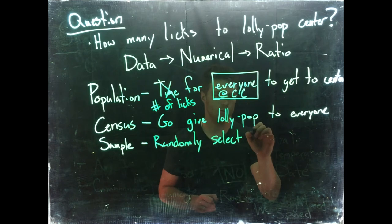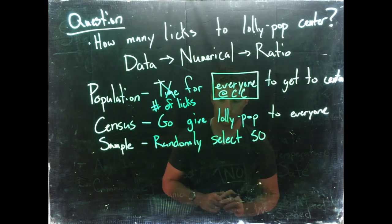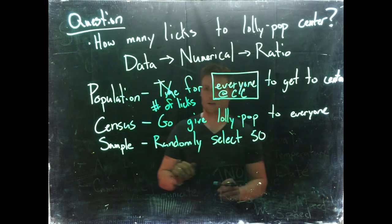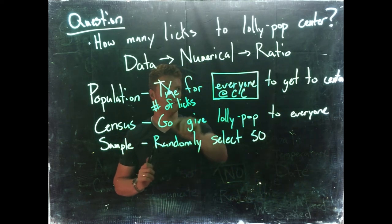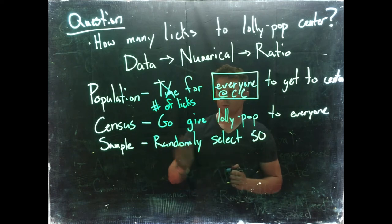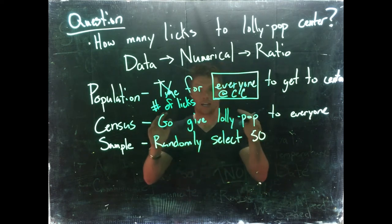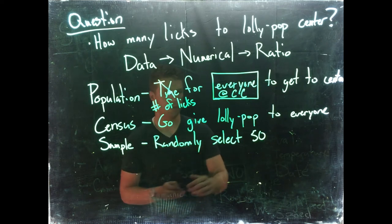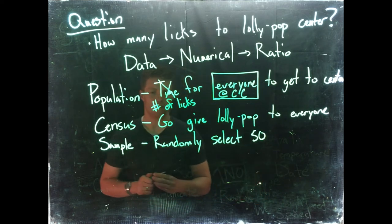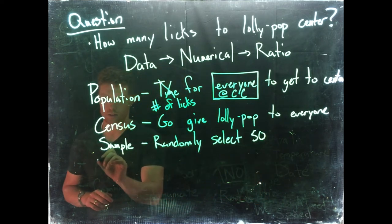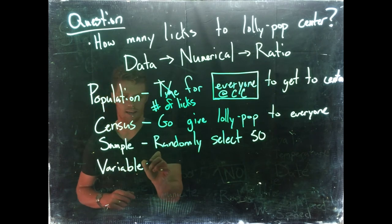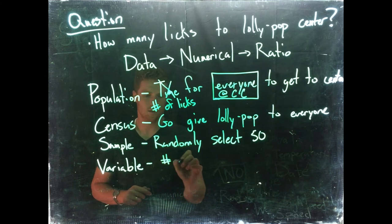Okay, at Casper College. Great. So now I know what my population is. We want to say everyone at CC. We want to figure out how many, the number of licks it takes to get to the center. We know what a census would be. It'd be if I actually gave a lollipop to everyone at CC. But the sample is I'm only going to do 50.